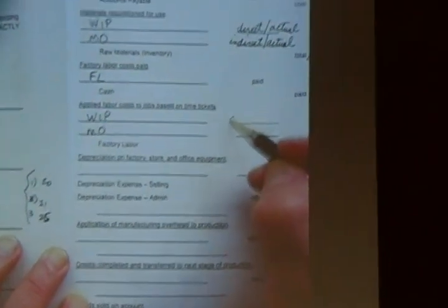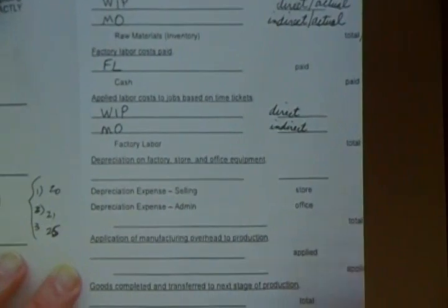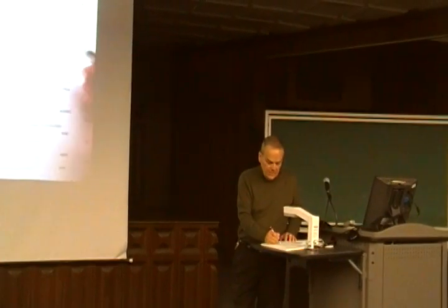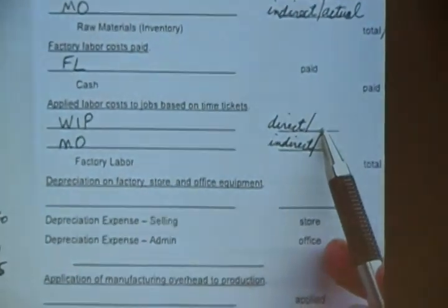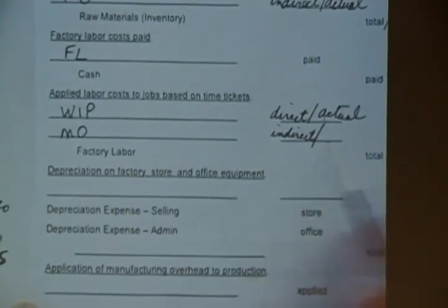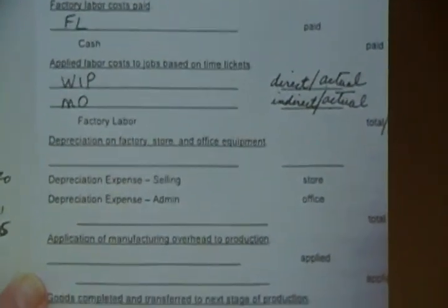Debit work in process — how much? Direct labor cost. Debit manufacturing overhead — how much? And credit factory labor for the sum of these two. That'll clear out the account. Factory labor at that point has a zero balance — we allocated all of it. Debit work in process for actual. Debit manufacturing overhead for actual. And credit factory labor with the actual cost we incurred.